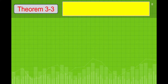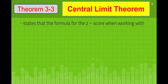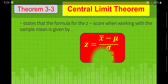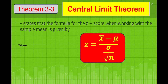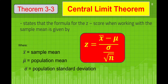That is under Theorem 3-3, which is the Central Limit Theorem. It states that the formula for the z-score when working with the sample mean is given by: z is equal to x-bar (the sample mean) minus mu (the population mean), divided by sigma (the population standard deviation) divided by the square root of n, which is the sample size.